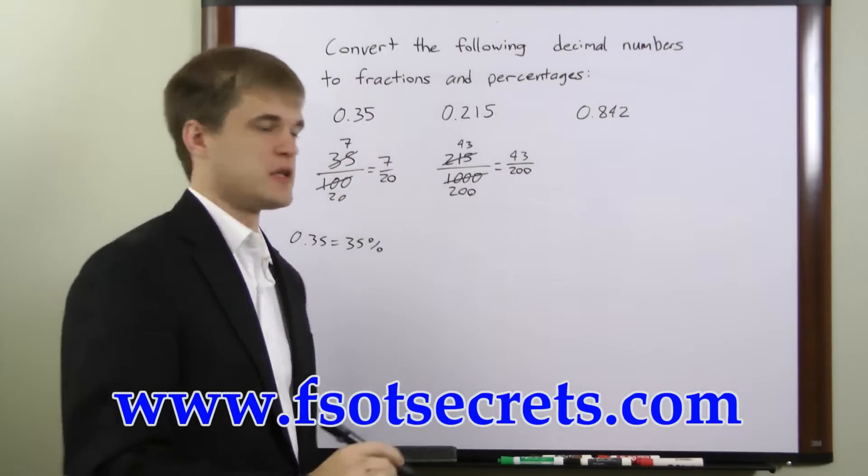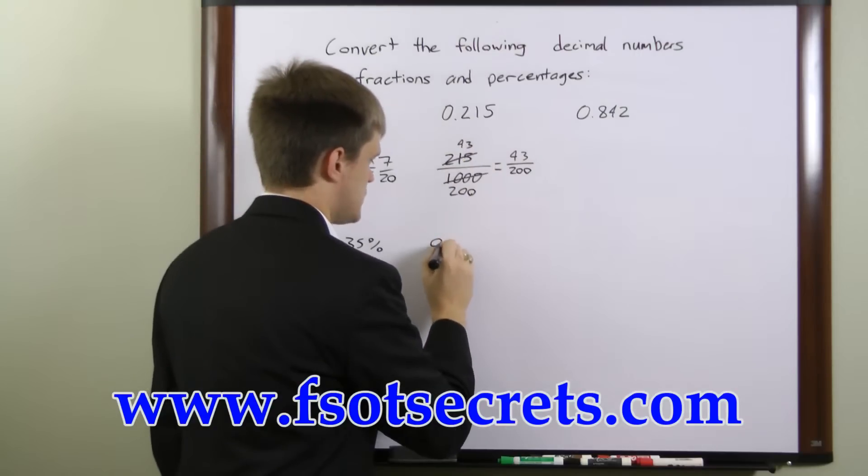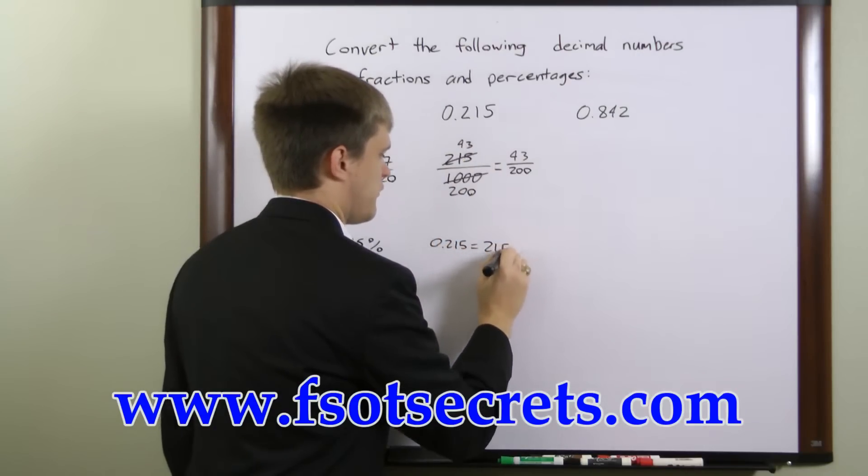To convert to a percentage, we can just move the decimal point two places to the right, so 0.215 is equal to 21.5 percent.